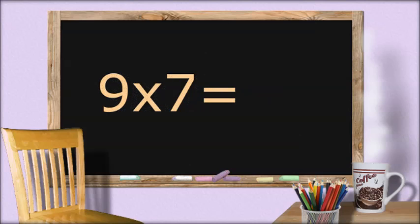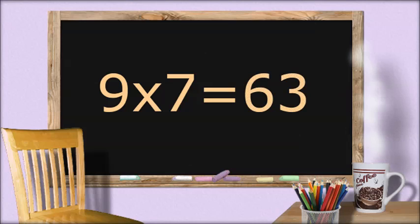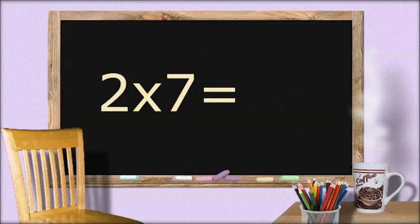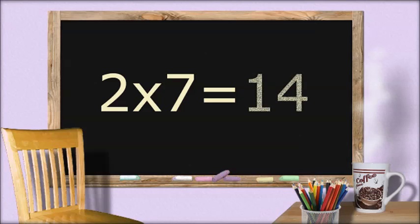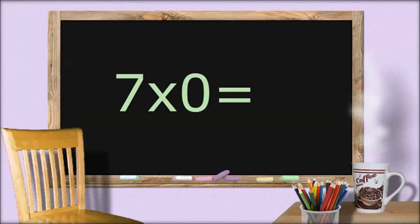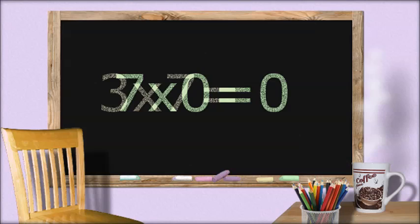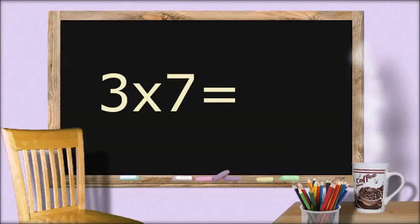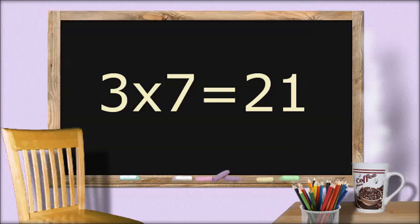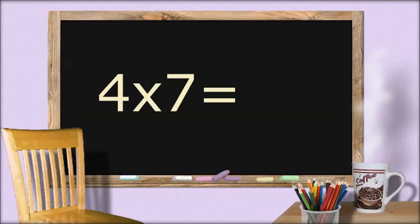9 times 7 equals 63. 2 times 7 equals 14. 7 times 7 equals 49. 3 times 7 equals 21. 4 times 7 equals 28.